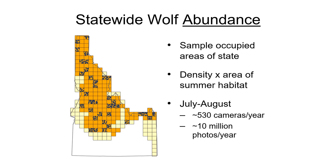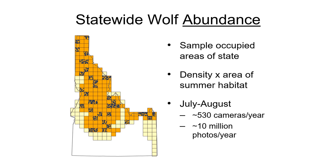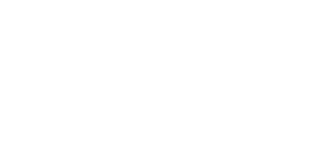On average during 2019 through 2022, we deployed about 530 abundance cameras that took about 10 million photos each year. The abundance estimates suggest a fairly stable population of about 1,550 wolves statewide during the summers of 2019 through 2021, with a slightly lower estimate of about 1,340 wolves in the summer of 2022. Abundance estimation with cameras is an evolving field of wildlife research, and Idaho's statewide wolf abundance estimates are the only estimates of their kind. IDFG continues to actively work with partners to improve the population monitoring methods we have for wolves.